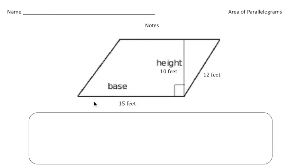To find the area of a parallelogram, the formula is area equals base times height. For this parallelogram, notice the base is 15, that's the bottom.